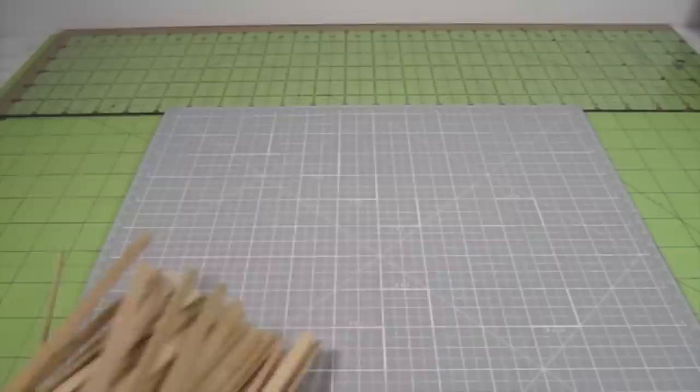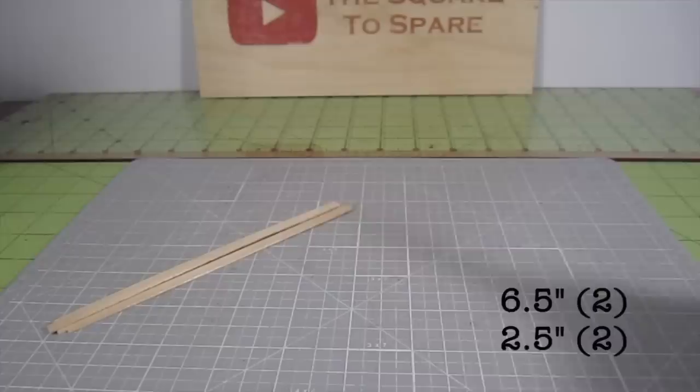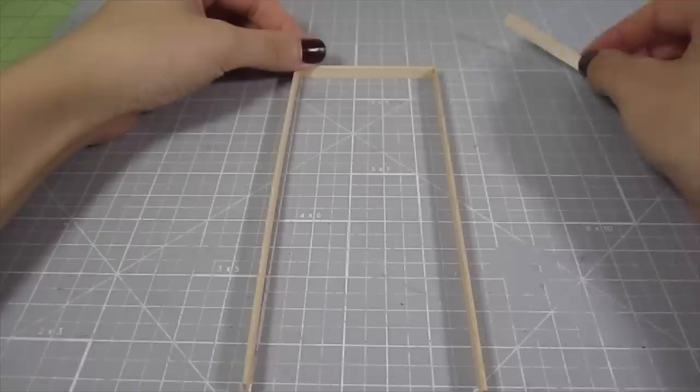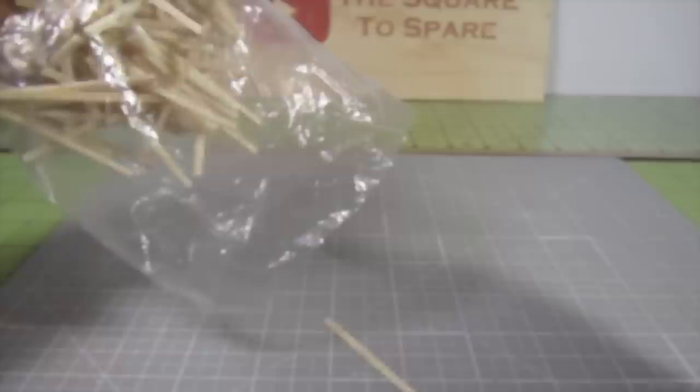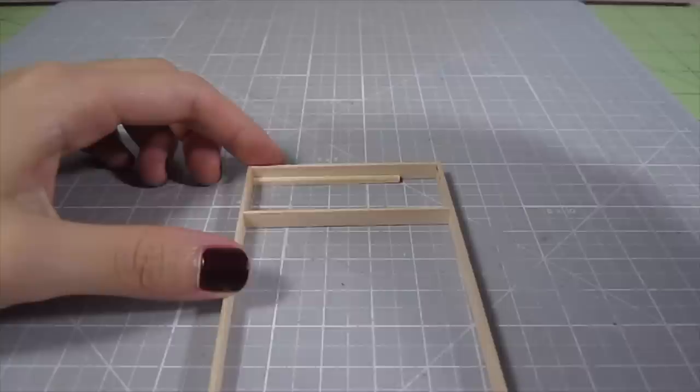While that dries, let's build the door frame. I'll be using these thick 1 1/4 inch wide coffee stirs for that. Cut out 2 6 1/2 inch lengths and 2 2 1/2 inch lengths. Glue these pieces together in this formation. Then take some thin craft matchsticks and glue them inside the perimeter of the top opening. This will be the frame for the small window.